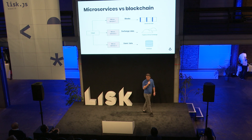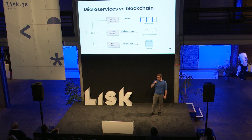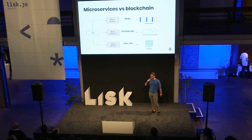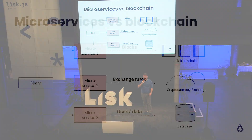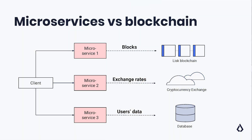At LightCurve, at Lisk, we develop multiple microservices that together provide one product: Lisk Service. One microservice is responsible for retrieving blockchain data. Another one is responsible for connecting to cryptocurrency exchanges to retrieve exchange rates. Those data combined together actually make another level — a more high-level view comparing to the Lisk blockchain.